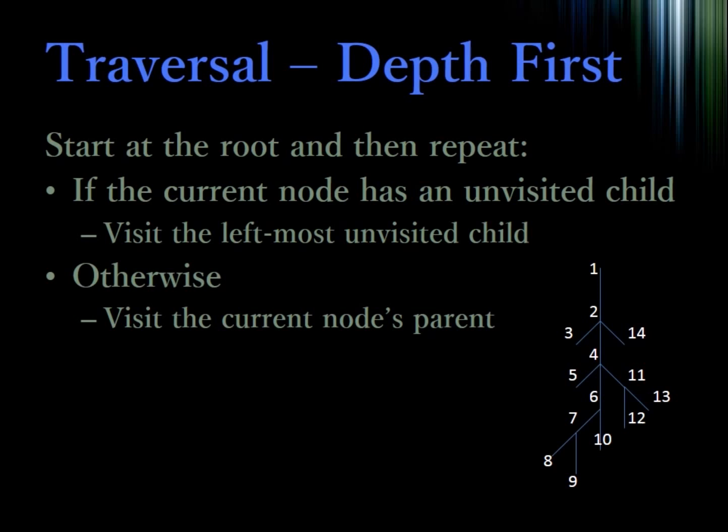We can accomplish this by two methods: either depth first or breadth first. We're going to do a depth first traversal. We do this by starting at the root node, and then repeating the following: if the current node has an unvisited child, we will visit the leftmost unvisited child; otherwise, we will visit the current node's parent. The traversal will go from 1, 2, 3, 4, etc., all the way to 14.